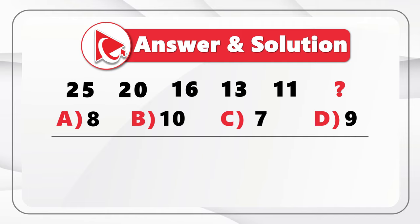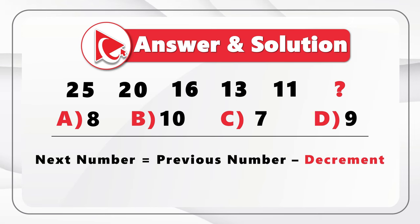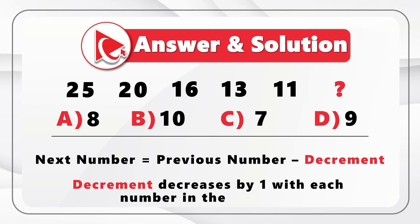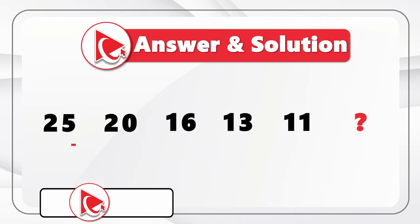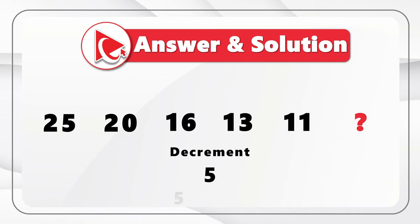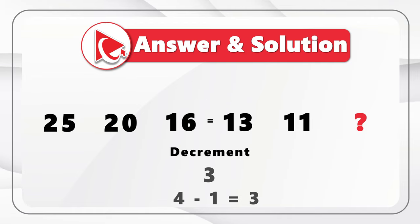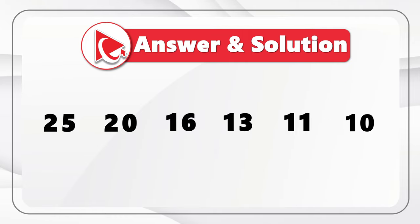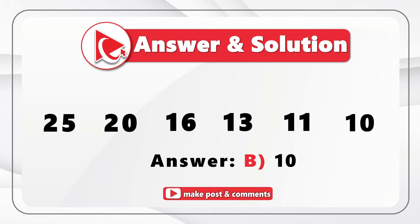Here we have a concept of decrement. The pattern is that the next number is calculated as the previous number minus the decrement, and the decrement increases by 1 with each number in the sequence. Our first number is 25 and the initial decrement is minus 5. So 25 minus 5 equals 20. Then the decrement becomes minus 4: 20 minus 4 equals 16. Then 16 minus 3 equals 13. 13 minus 2 equals 11. And 11 minus 1 equals 10. So the correct answer is Choice B: 10. Please post your answer and solution in comments so we can all learn.